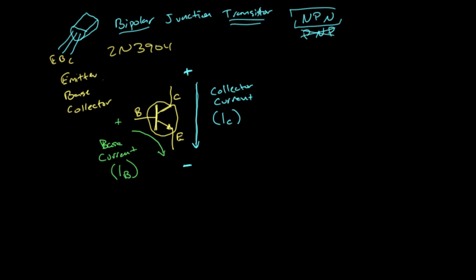The transistor automatically adjusts the collector current based on the base current. What the transistor is trying to do is make sure that the collector current equals the base current times some value — usually a pretty large value, typically 100 to 200, with 100 being pretty common. So the transistor says: if there's a base current flowing, I'm going to multiply it by 100 and try to make the collector current equal to that.